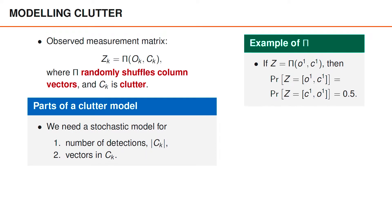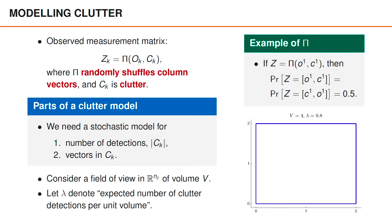We are now going to develop a model for the clutter detections, which is needed to obtain a model for Z_K. Since C_K is a random matrix, the model for C_K needs to characterize both the number of measurement vectors and the distribution of the vectors given how many they are. For the development of the clutter model, we initially assume that our sensor has a field of view of volume V, and we use lambda to denote the expected number of clutter detections per unit volume. As an example, we can assume the measurement space is two-dimensional. The field of view is an area of size 2 by 2 so the volume is 4, and lambda is 0.8, meaning we would expect 3.2 clutter detections on average. Note that we use the term volume independently of the dimensionality of the space.